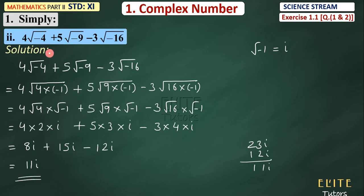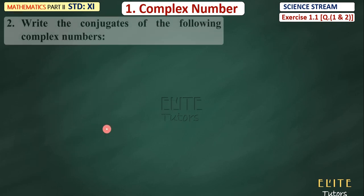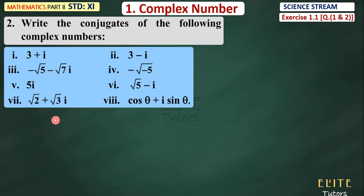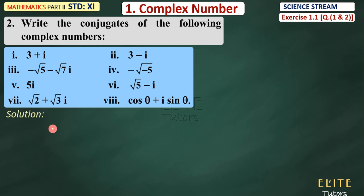So this is Question Number 1 and Question Number 2 done. Now what is the next question? Write the conjugates of the following complex numbers. So this is the same complex numbers — you have to write the conjugates. Let's start. If someone comes directly to these sums, I will remind you that you will have to see the introduction video — the link is in the description box and on the i button.